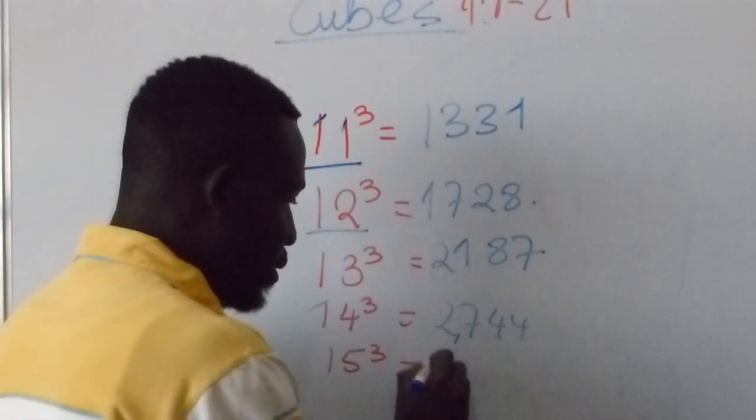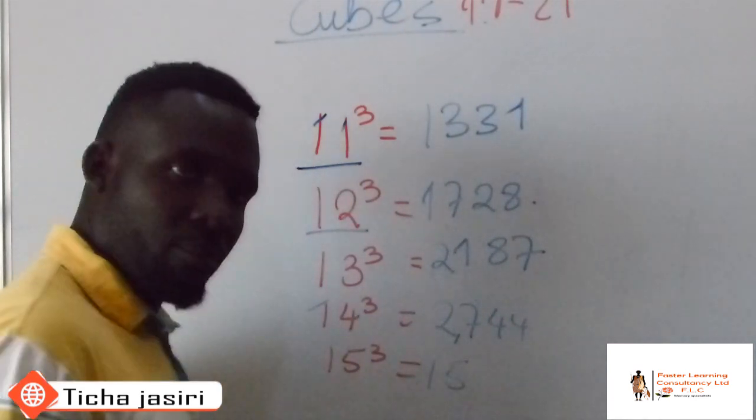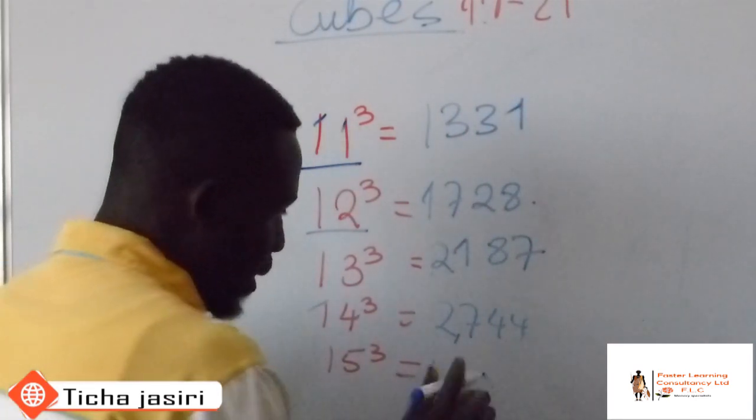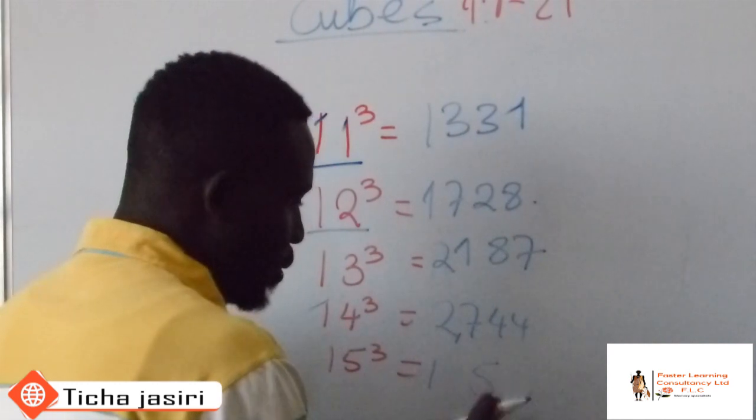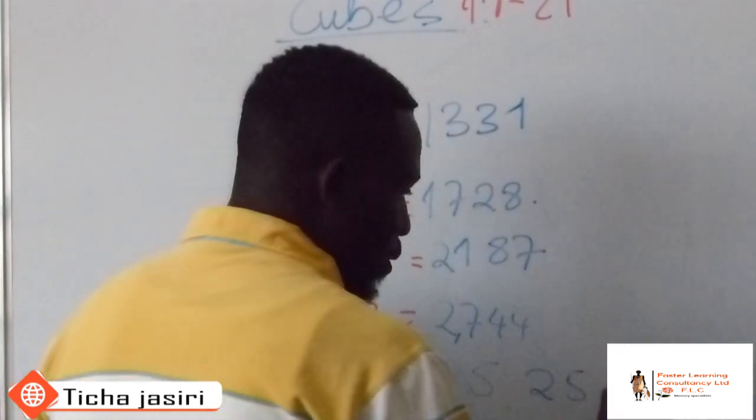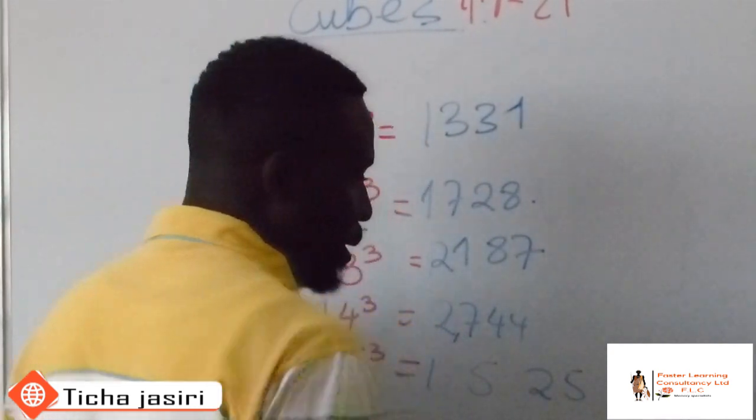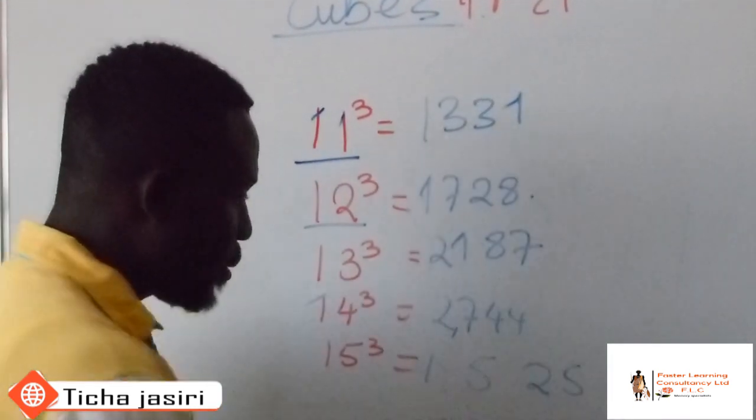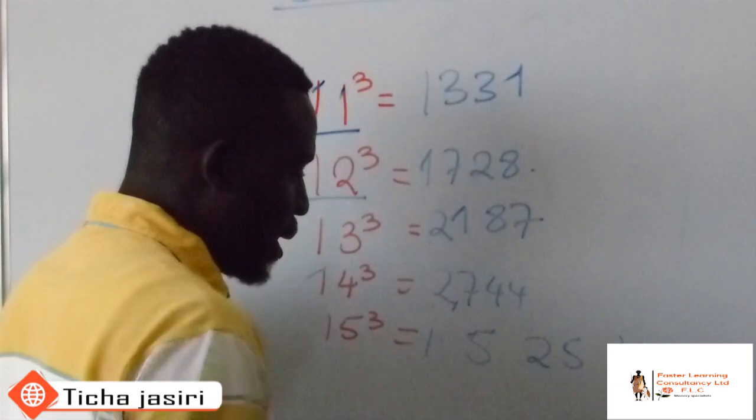Now the last one is 15. So keep writing 15. Let me just separate them. So write 15 first. Square 5, you have 25. Cube 5, you have 125. This is going to be a good example because now we will be able to understand how that one works.